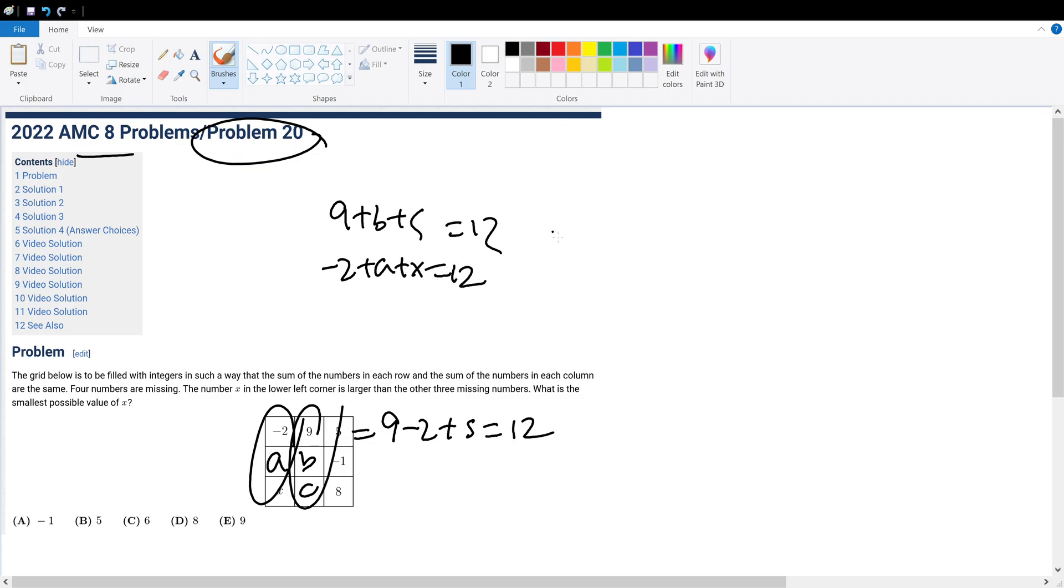So let's do B in terms of C. So B equals 12 minus 9 minus C, or 3 minus C. So let's write that here. That is 3 minus C.